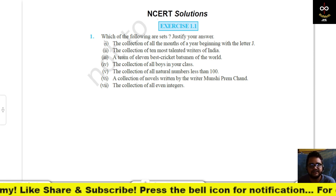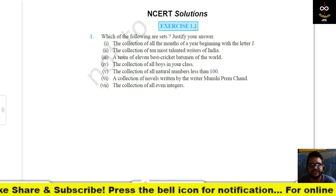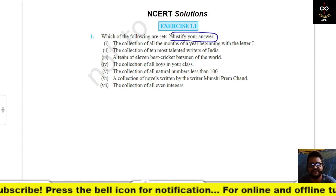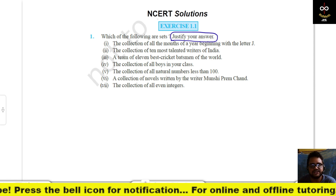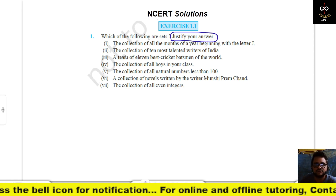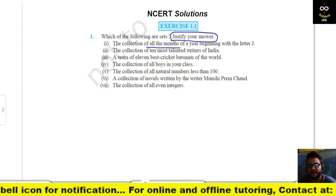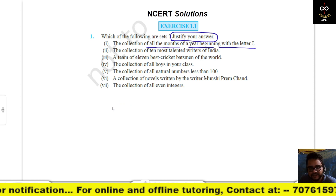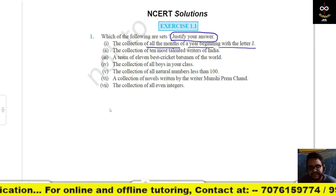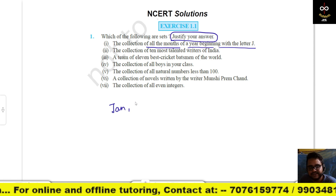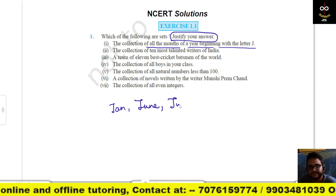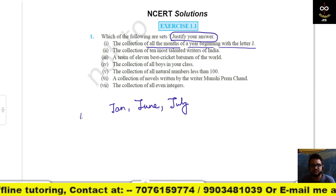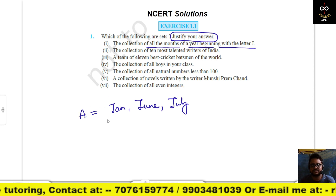Here in the first question of exercise 1.1, it says: which of the following are sets? Justify your answer — that is, why these collections are a set or not. First, the collection of all months of a year beginning with letter J. We have three months starting with J: January, June, and July. There are no other months starting with J, so this is a set with three elements.